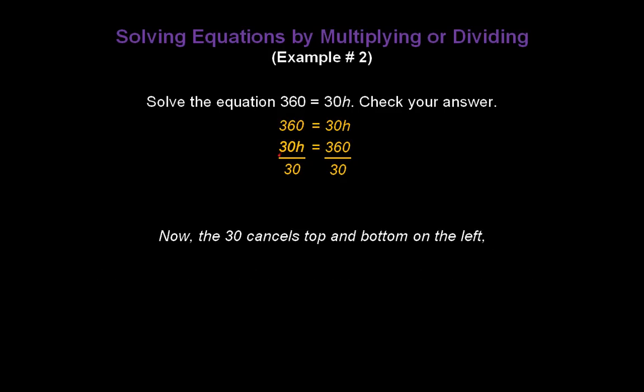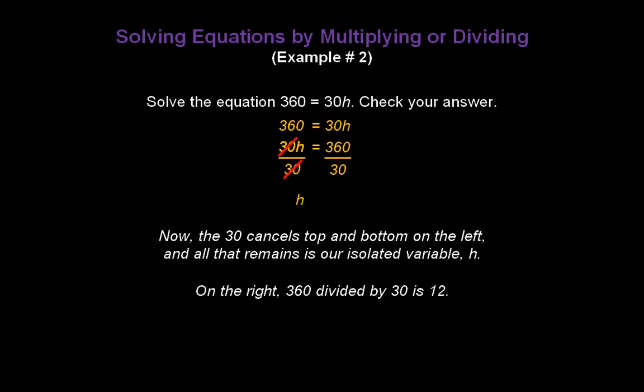Now, the 30 cancels top and bottom on the left-hand side. 30 divided by 30 is just 1. And all that remains then is our isolated variable h. So we'll bring that down to a new line in our equation. And on the right, 360 divided by 30 is 12. So we have 12 on the right-hand side. And our answer is h equals 12.